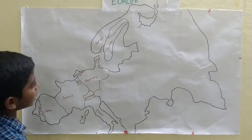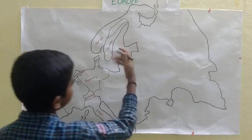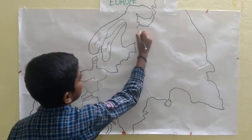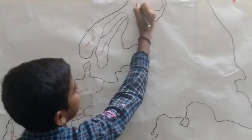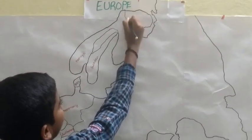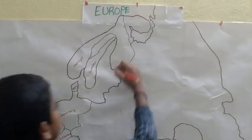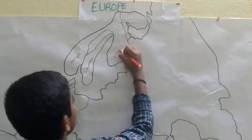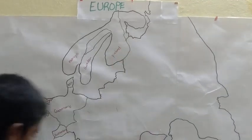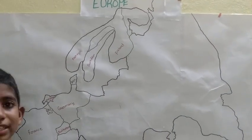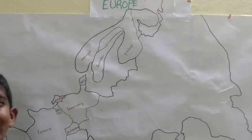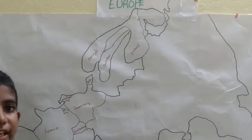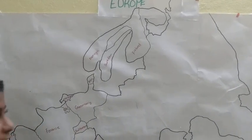After that we go to the next country — Finland. Finland is also known as the Land of Thousand Lakes.